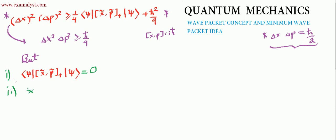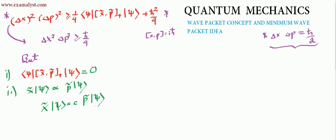The second condition is that x̃ acting on a wave function must be proportional to the momentum operator p̃ acting on ψ. That means x̃·ψ must equal some proportionality constant c times p̃·ψ. These are the two conditions that need to be satisfied.